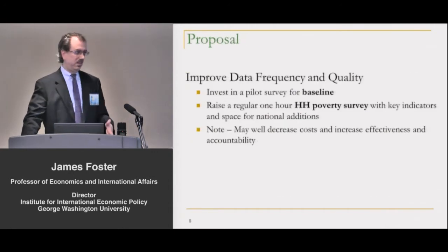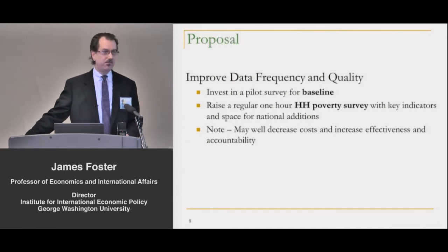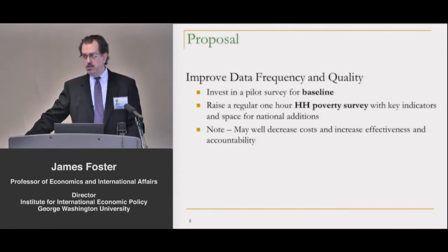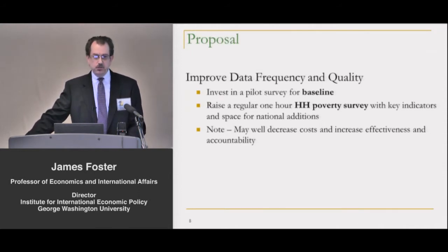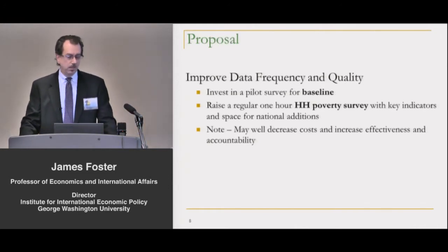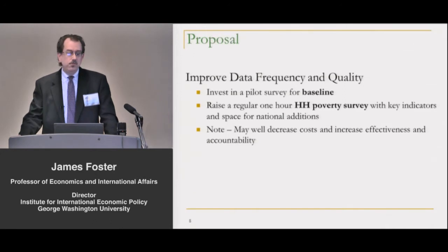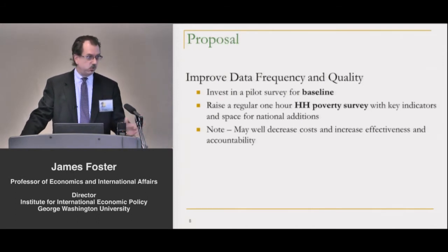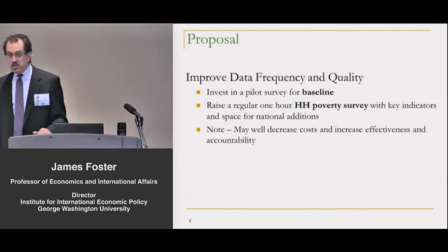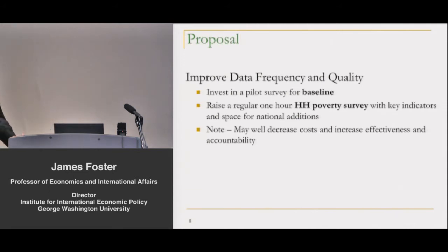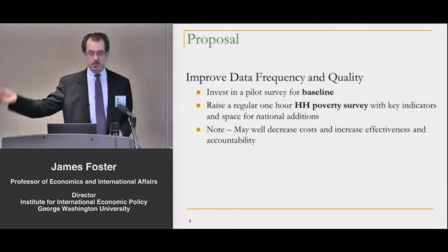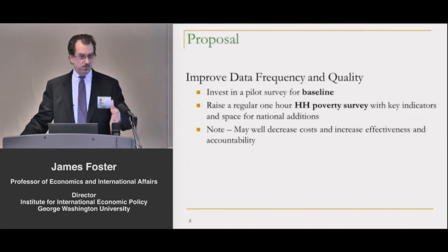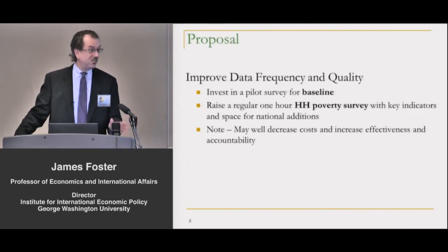Obviously, when you're talking measurement, you really do want to say up front that one part of any proposal for 2015 and beyond should first and foremost start with data. A proposal here might be to improve data frequency and quality by investing in a pilot survey for baseline — a regular one-hour household poverty survey with key indicators and space for individual national additions based on local priorities. This could actually decrease the cost of providing information, because right now data is gathered willy-nilly from various contractors. If it's all done upfront from one source, it could actually be cheaper.